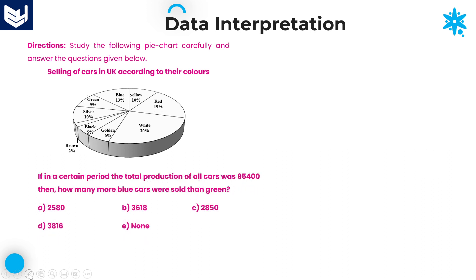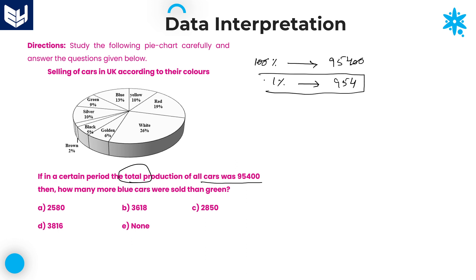Let us look at the last question. If in a certain period the total production of all cars was 95,400 — total is always 100% — then 1% equals 954. Using this, you can calculate whatever value you want, whether individual cars, summation, or difference. The question asks: how many more blue cars were sold than green?